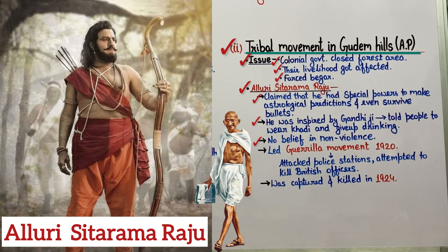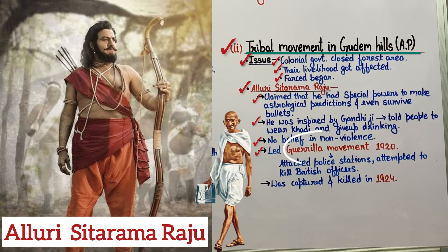But unlike Gandhi's idea of non-violence, Sita Ram Raju believed that India could only achieve freedom through force. He believed that only by fighting could they gain independence. So in 1920, he started a movement which was called the Guerrilla Movement.